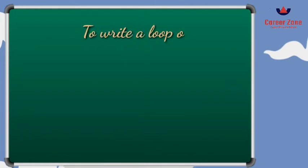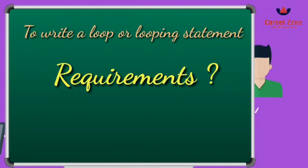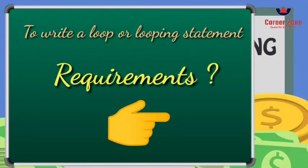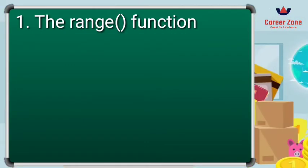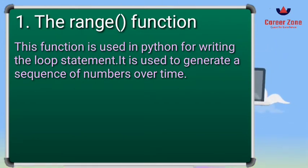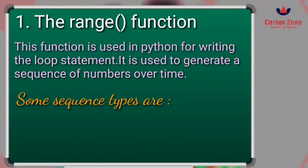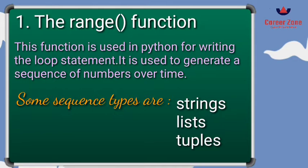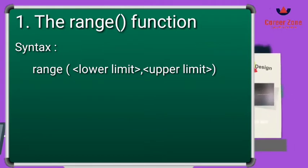Before discussing the different types of loops used in Python, I want to discuss a few important terms that are the basic requirement for writing looping statements. The first one is the range function. This is a function used with Python for writing loop statements. It actually generates a list, which is a special sequence type — meaning a sequence is followed for executing the loop. Some sequence types are strings, lists, and tuples.